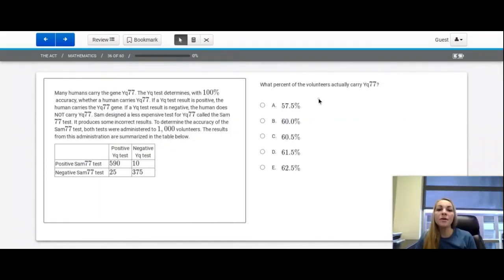Question number 36. What percent of the volunteers actually carry the YQ77? In this case, we're going to be looking at the positive YQ test column. We're going to add these two numbers together. So we have 590 plus 25 over our total, which is the 1000 volunteers. When I add these two numbers together, I get 615, and I forgot a zero there, and then over a thousand. That as a percentage is 61.5%. If we would just type that into a calculator, we can verify that.